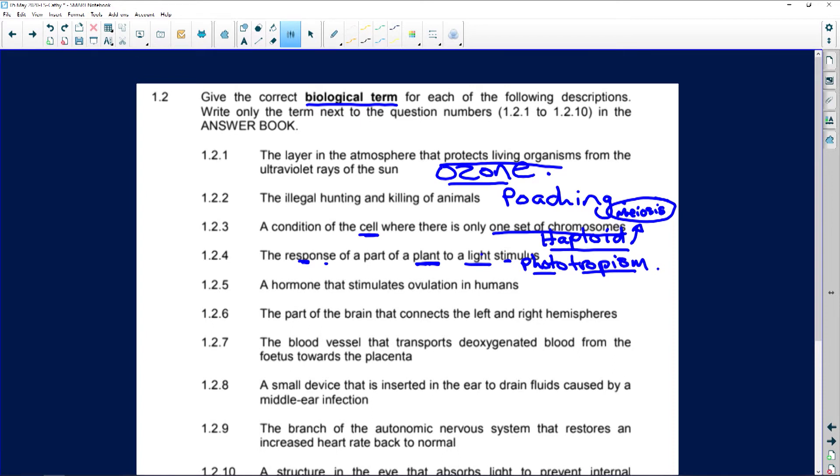A hormone that stimulates ovulation in humans is simple. It's secreted by the pituitary gland. It is just good old LH or luteinizing hormone.